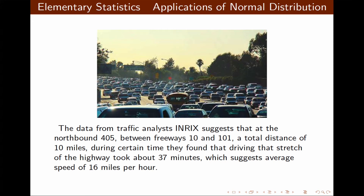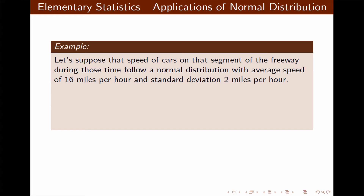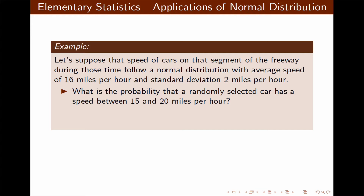Data collected by a company suggests that the average speed of cars on a certain part of freeway 405 is about 16 miles per hour. Suppose the speed of cars has a normal distribution with an average speed of 16 miles per hour and a standard deviation of 2 miles per hour. If we randomly select a car, what's the probability that the speed would be between 15 and 20 miles per hour?